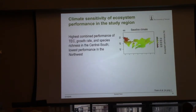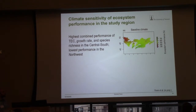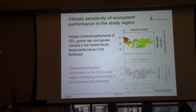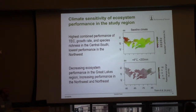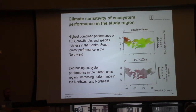How is this distributed on the landscape? If we now take these indicators together and look at how they're scattered, we can see that in the central south we have the highest ecosystem performance, while the northwest performs worst. Now, let's take a step further and see what happens if we do the prediction with an increase of 4 degrees and 200 millimeters in precipitation. The interesting thing is that the Great Lakes region is red — that's not good. But in the northwest and northeast, we have some green areas where overall ecosystem performance actually even increases slightly.